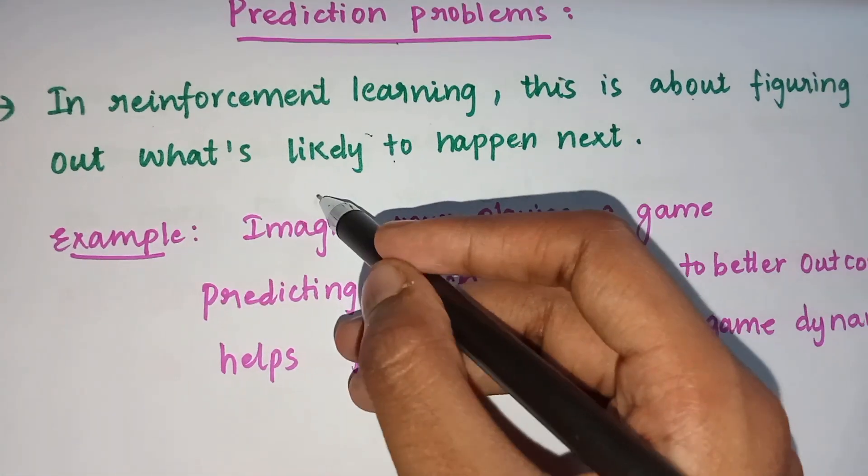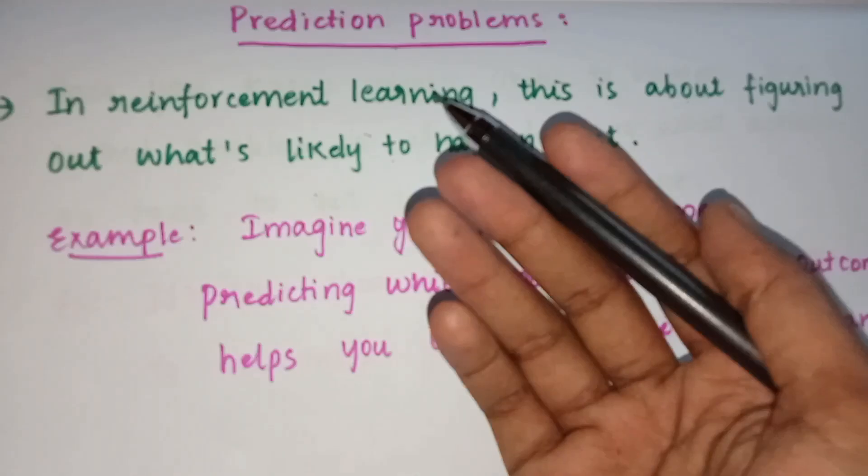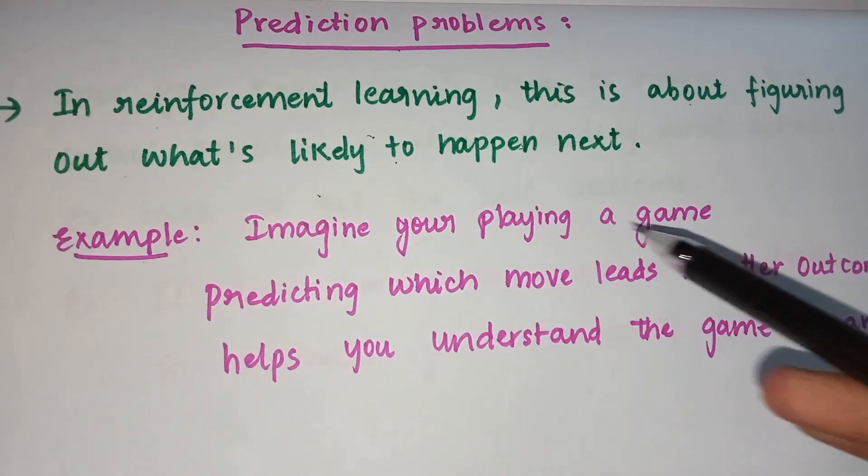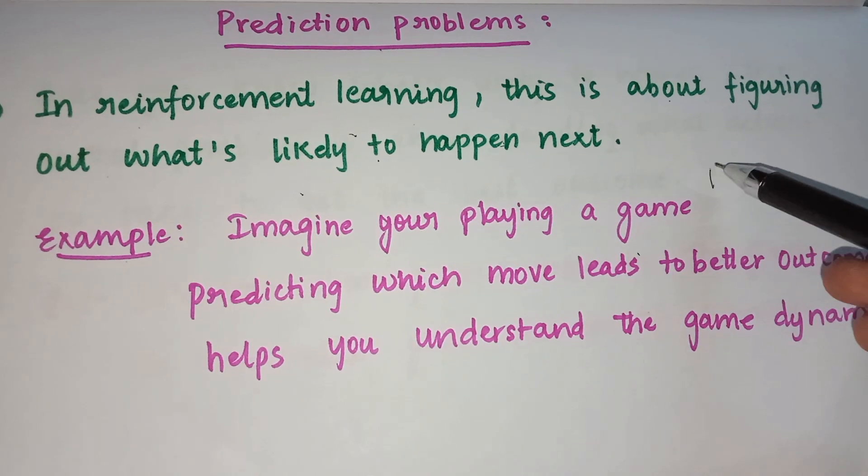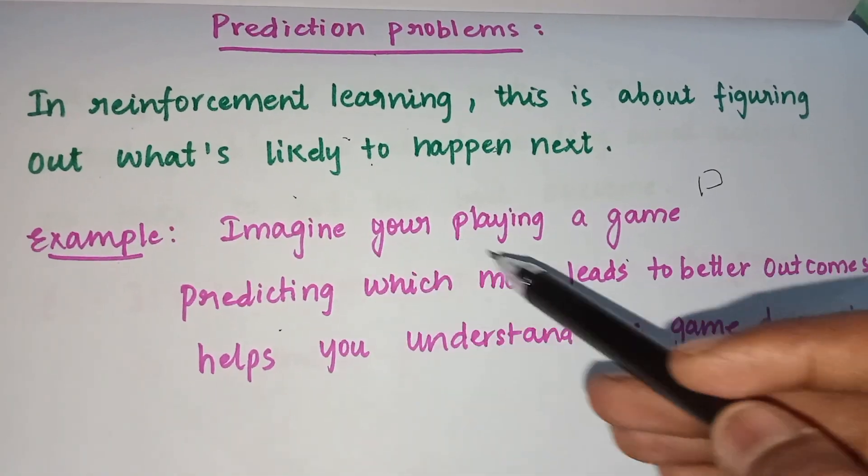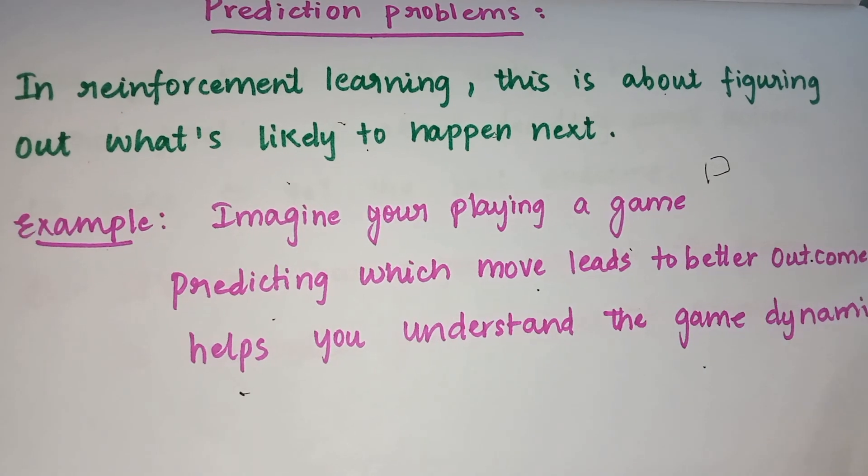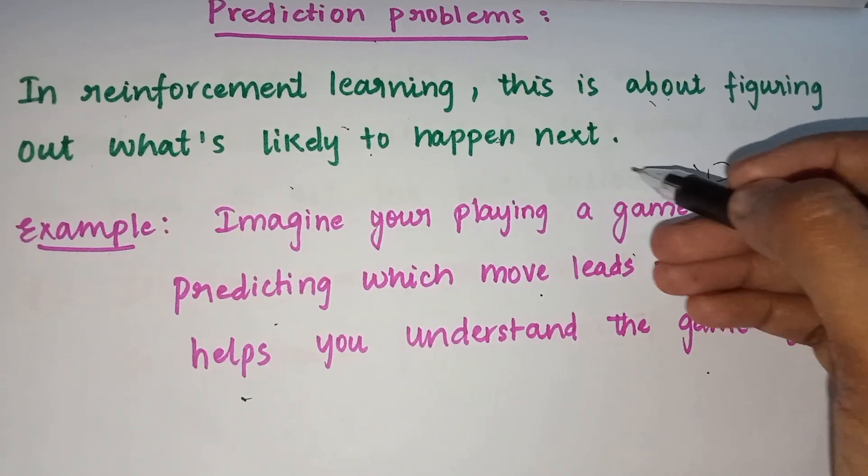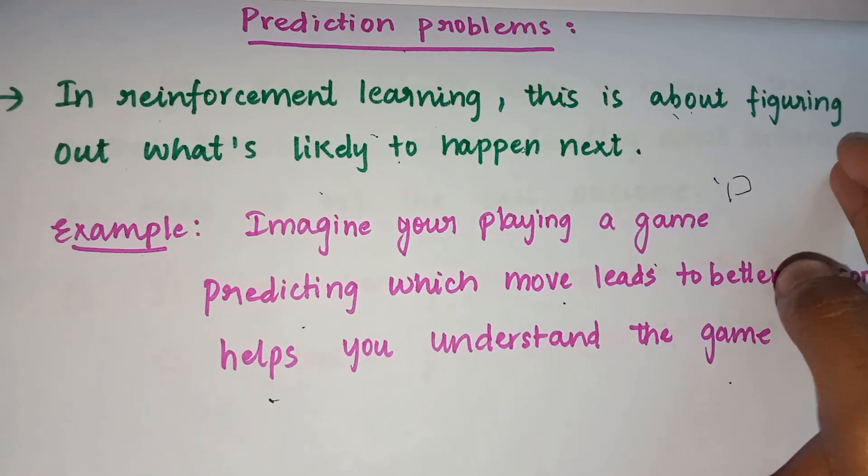We're figuring out what is going to happen next. For example, imagine you're playing a game, let's say chess. Predicting which move leads to better outcomes helps you understand the game dynamics. If you know that the king has to move this way, then you're not going to lose the game.